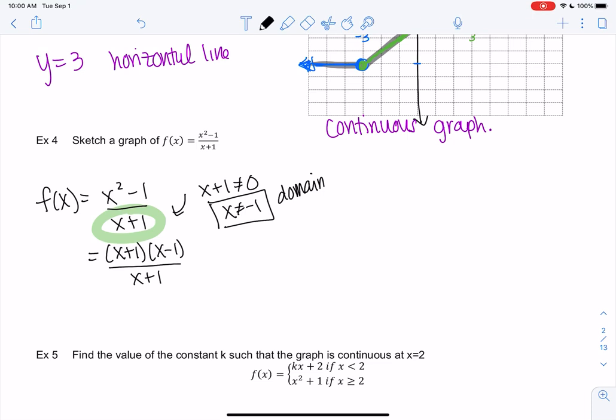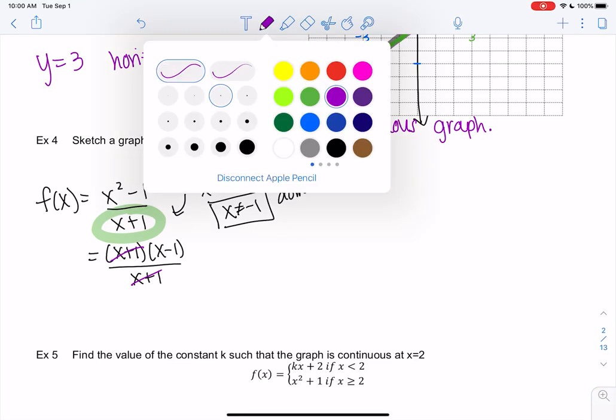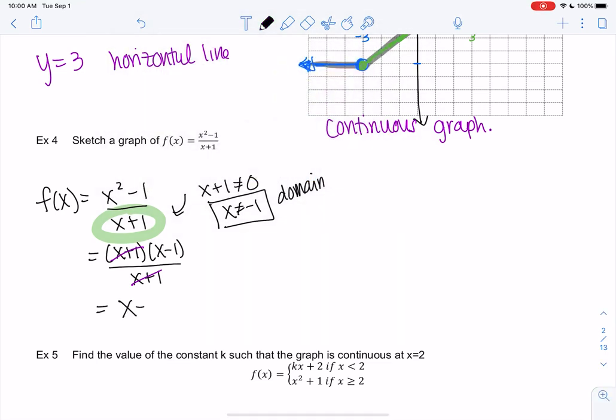We're going to go ahead and cancel and we get f(x) equals x minus 1, but there is a rule: x can't equal negative 1 because of the original function. So it is almost going to be a line, but x cannot be negative 1 again, and that has to do with what we started with. Even though traditionally negative 1 is fine in this function, because the original function had a denominator, we cannot be equal to negative 1.